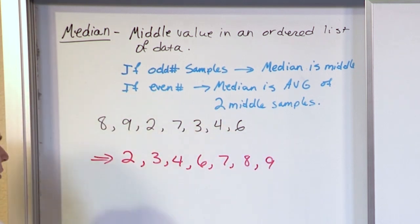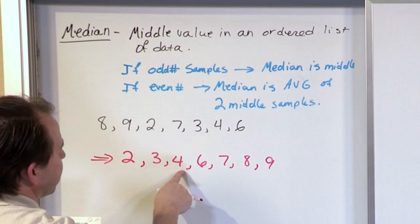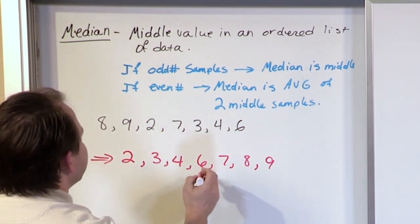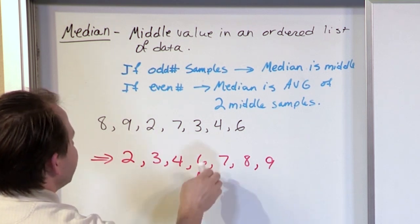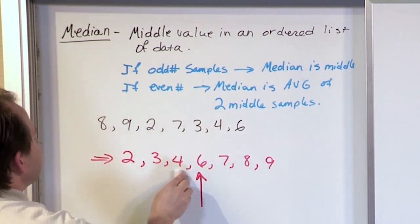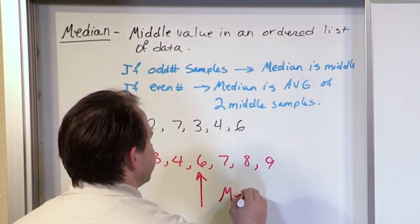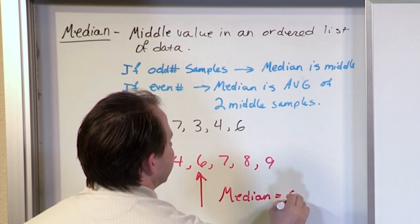Just rearrange this thing into an ordered list. You look here, you have 1, 2, 3, 4, 5, 6, 7. So 3 on this side, 3 on this side. This looks like the nice middle value. If I choose this as my median, I'm going to have 3 on this side and 3 on this side bracketing it. So the median is 6.